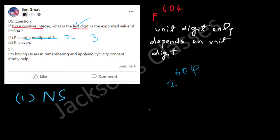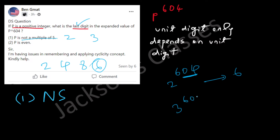For 2 to the power 604: since 604 is a multiple of 4, it is of the form 4k+4. The power cycle of 2 is 2, 4, 8, 6 — so the unit digit is 6. For 3 to the power 604, the power cycle of 3 is 3, 9, 7, 1 — so the unit digit is 1. These are different answers.